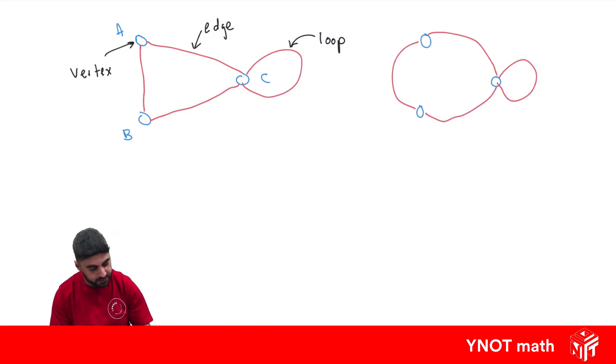Now something else we have to know is the degree of a vertex. The degree of a vertex shows how many edges are connected to it. So A has a degree of 2 because there are two edges connected to this vertex.